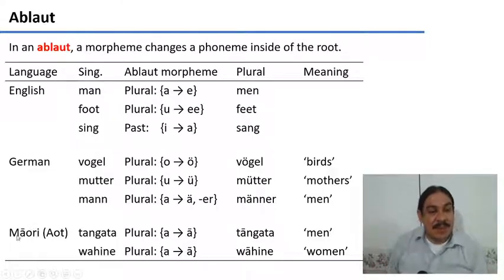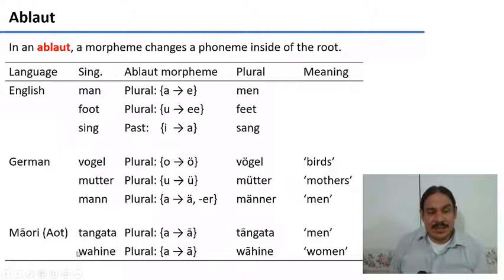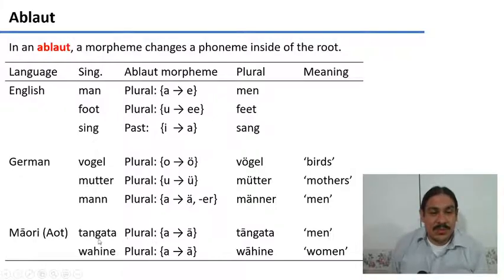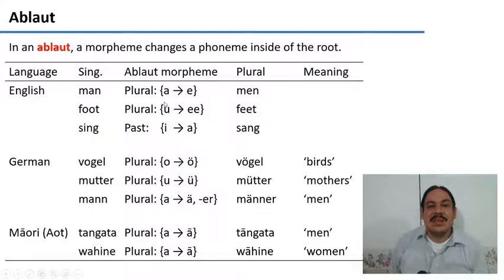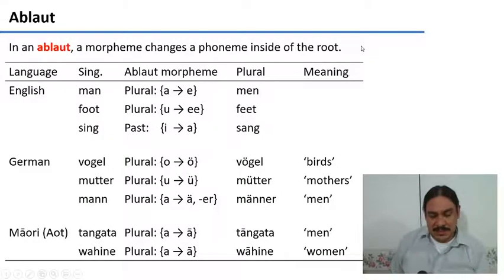Finally, in the Māori of Aotearoa, New Zealand, you have words like 'tāngata' and 'wahine' — man and woman. The plural is formed by changing the first 'a' into a long 'ā': 'tāngata' becomes men, 'wāhine' becomes women. So this process of changing a part of the root is called an ablaut.